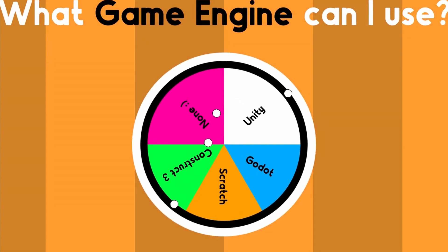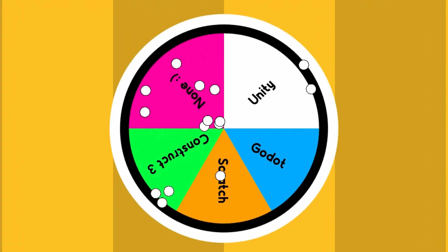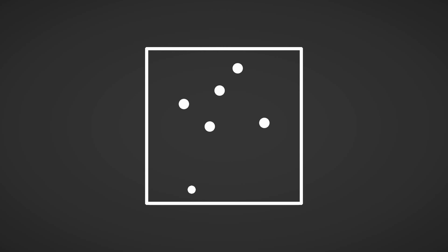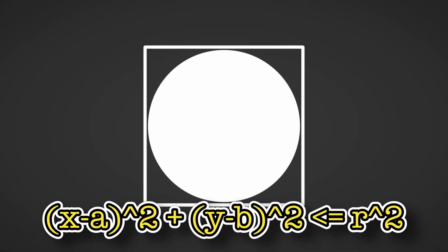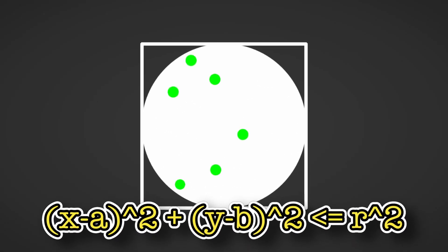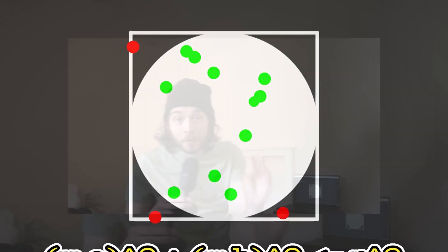We start with the dart and making it choose a random position on the dartboard to land on. Using the x and y axis, we can generate a random coordinate inside the bounding square, then using the equation for a circle, check to see if it's on the dartboard. If it's not, we simply repeat until it is.